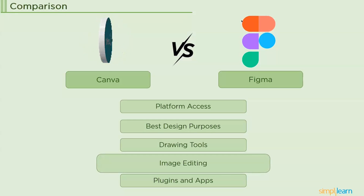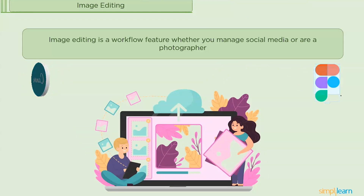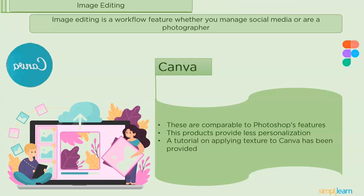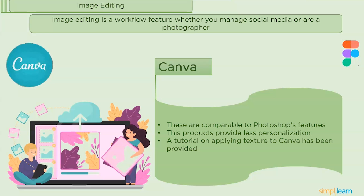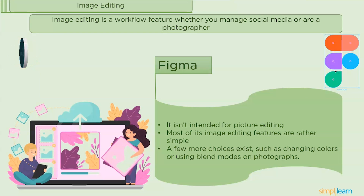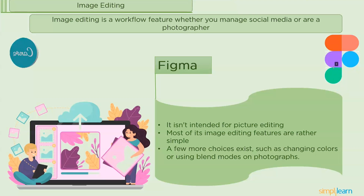The next category is image editing. For Canva, most of its image editing capabilities include adjustments, filters, and third-party filters. While some features are comparable to Photoshop, Canva products offer less customization. With Canva Pro, you get access to more and better editing tools. For Figma, the majority of its image editing features are quite basic because it is not designed for photo editing. Additional options include altering colors or applying blend modes to images. Figma requires a pre-edited image from another tool to be provided in advance.